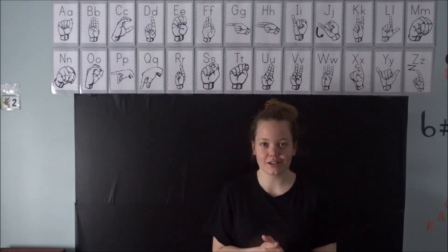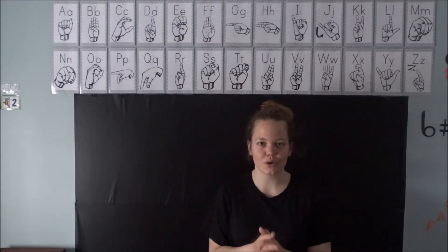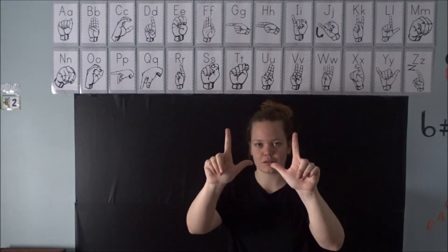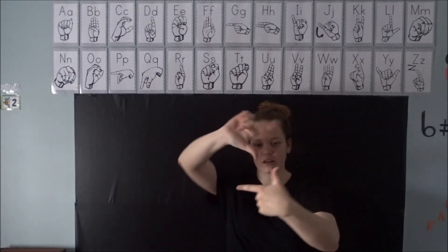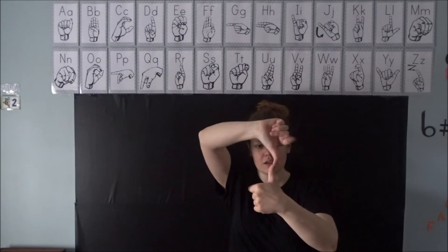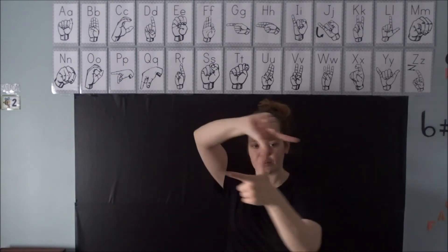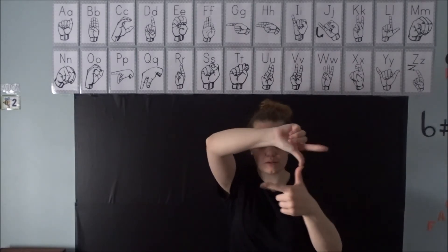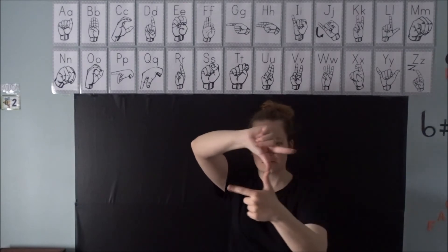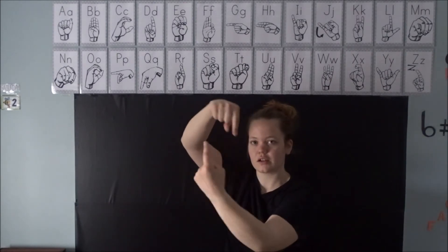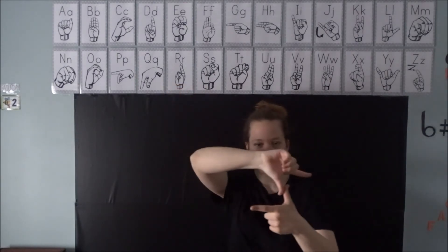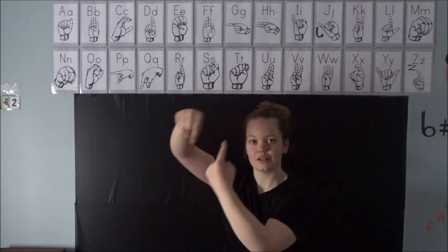The next one we are going to learn is tornado. You are going to take your three fingers and put them down, then put your thumbs together. You are going to wave them like this, and then take your fingers and spiral it away — like a tornado.